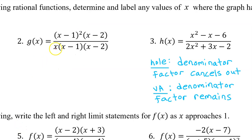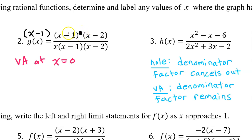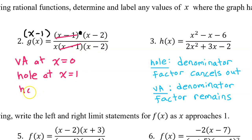In number 2, the factor of x in the denominator does not cancel out with anything, so that tells us we have a vertical asymptote at x equals 0. The x minus 1 cancels out with one of the factors of x minus 1 in the numerator. Even though x minus 1 squared means x minus 1 times x minus 1, so we have an extra x minus 1 factor left in the numerator, still it's a hole. We have a hole at x equals 1 because the factor in the denominator cancels out.